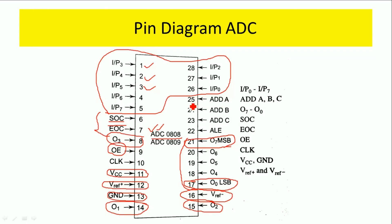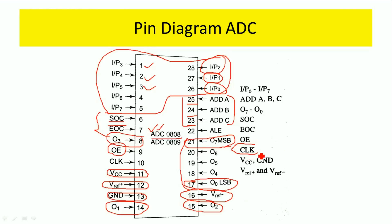There are three address lines on pins 25, 24, and 23. These lines are used to select one of the analog inputs of ADC 0808. If ABC is 000, analog input 0 is selected; if 100, IP1 is selected; if 010, IP2 is selected. Using these three ABC lines we can select a particular analog input. The same clock as the processor clock is given to this ADC 0808.